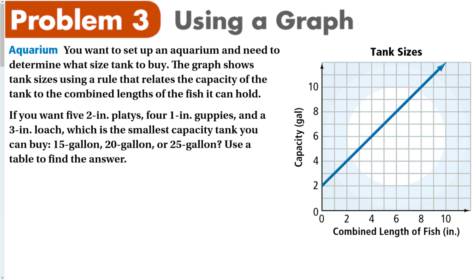Okay. Let's use a graph to figure out a pattern. So for this graph, we want to set up an aquarium. And we need to determine what size of tank to buy. The graph shows the tank size using a rule that relates the capacity of the tank, so how big the tank, how big of a tank do you need with the length of all the fish in the tank? So let's figure this out. You want five two-inch platys, four one-inch guppies, and one three-inch loche. Now you have to have which tank can you buy? You have to buy the one bigger, right? So you can't round down. You always have to round up so that the fish all fit in the thing.